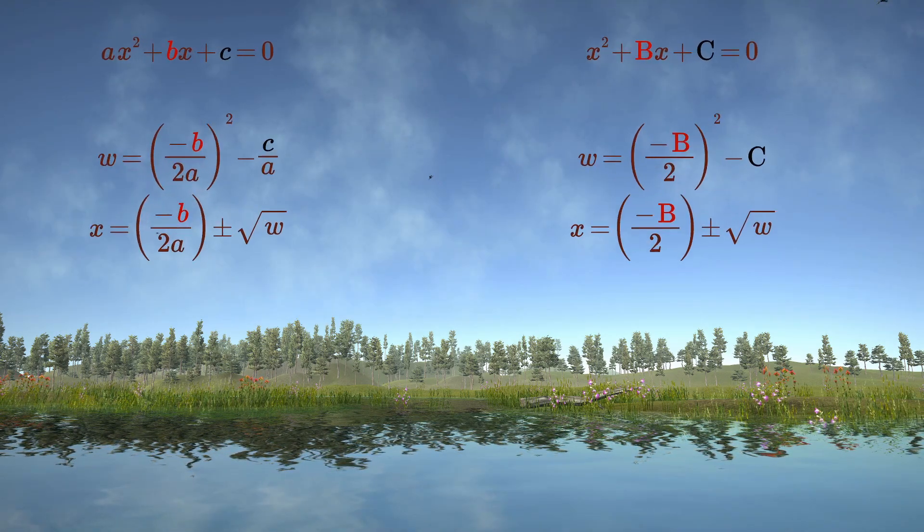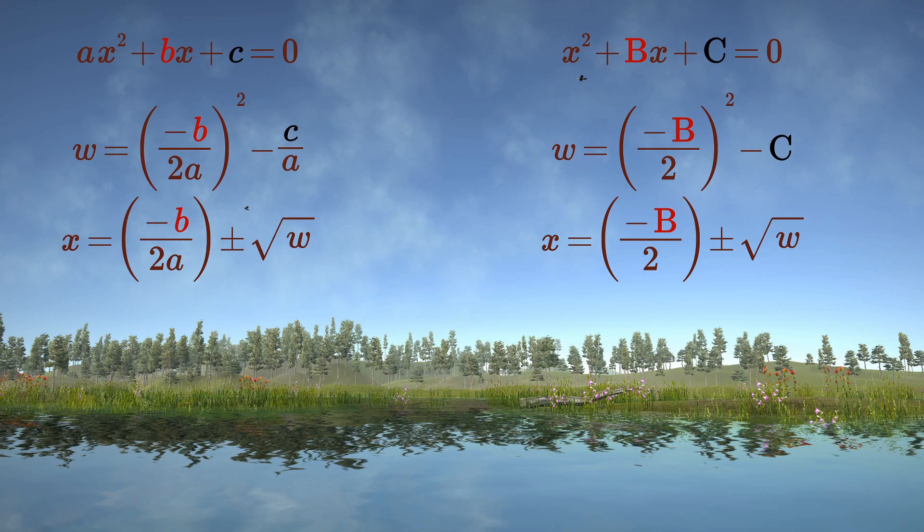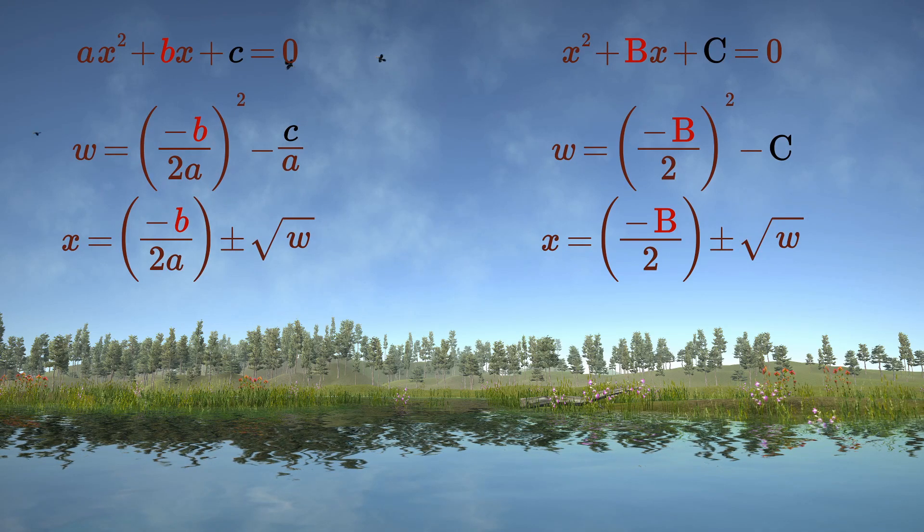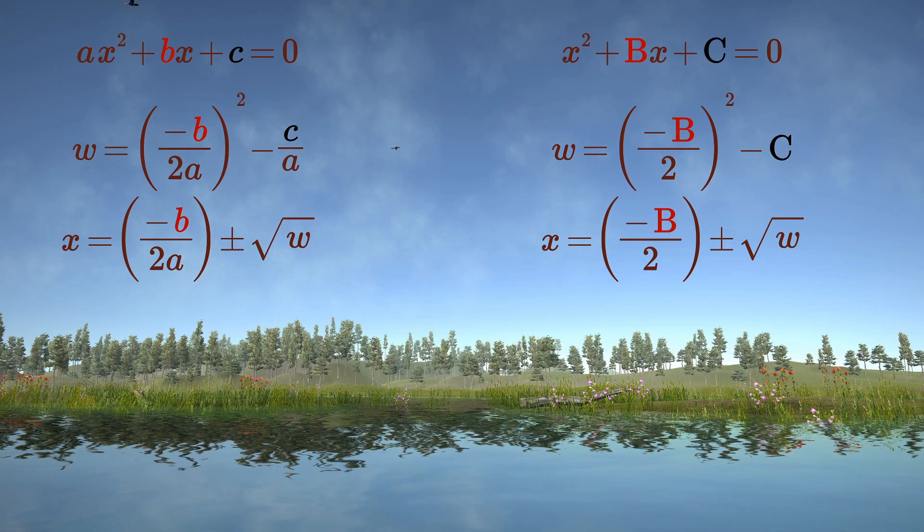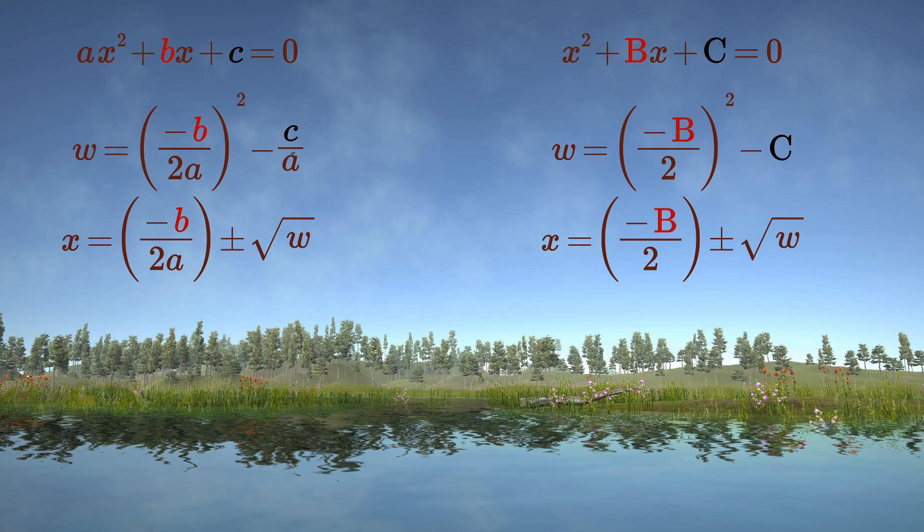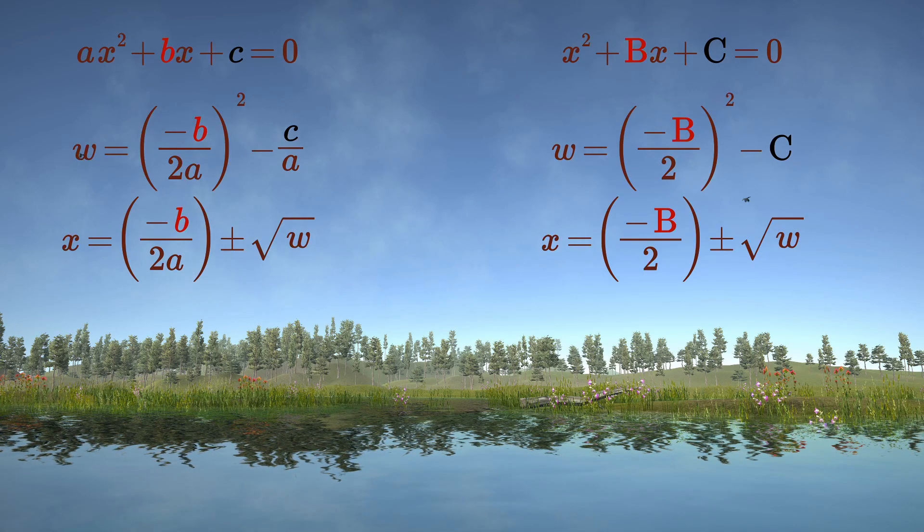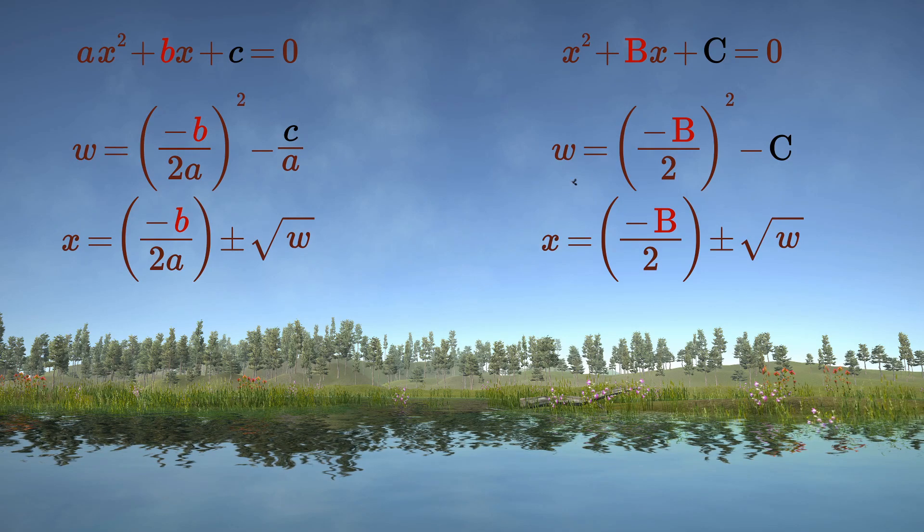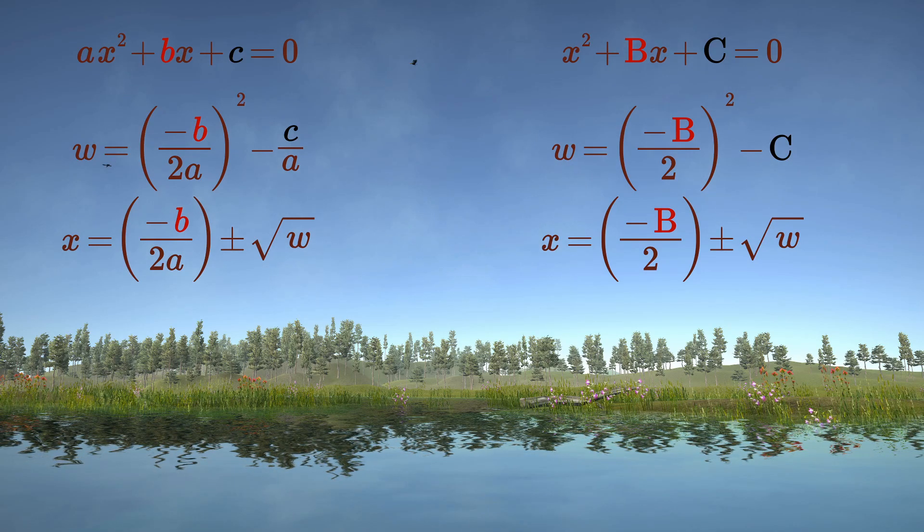And if you divided the equation by a to start off with, indicating the new coefficients by capital B and C, it becomes even easier. The solution is then obtained by squaring B over 2, subtracting C, and adding the square root of this to minus B over 2.